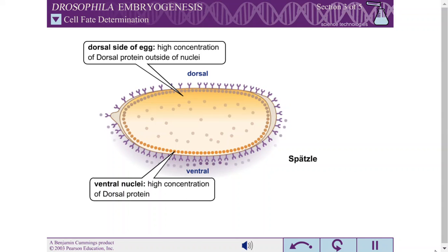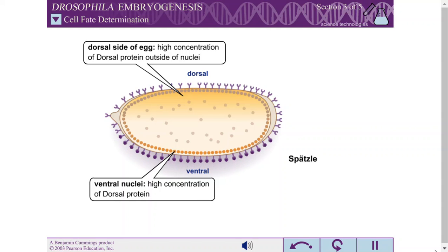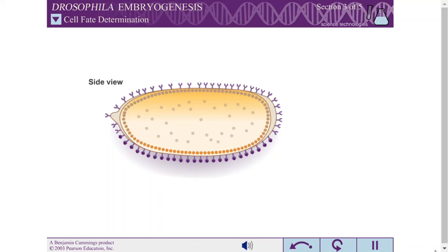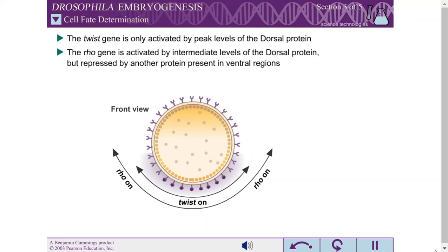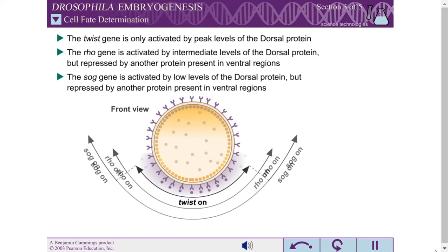This may seem confusing since Dorsal protein is found in ventral nuclei. The name 'Dorsal protein' comes from the fact that the concentration of Dorsal remains high at the dorsal side of the egg, since none of the Dorsal protein has entered the dorsal nuclei. The activation of some genes targeted by the Dorsal protein requires peak levels of Dorsal protein, while others can be activated by intermediate and low levels. Other proteins can also act on the genes targeted by the Dorsal protein, leading to patterns of expression.